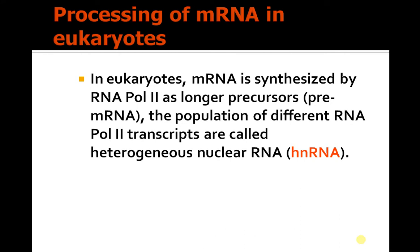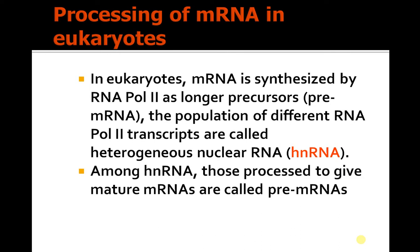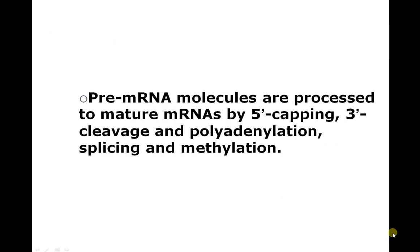In eukaryotes, mRNA is synthesized by RNA polymerase 2 as long precursors called pre-mRNA. The populations of different RNA polymerase 2 transcripts are called heterogeneous nuclear RNA. Among the HNRNAs, those processed to give mature mRNAs are called pre-mRNAs.